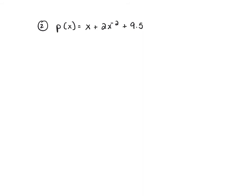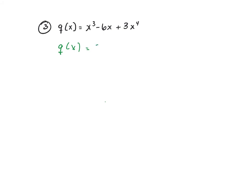This one is not a polynomial, so we're done with it. The next one is a polynomial. In standard form: q(x) = 3x to the fourth, then x cubed, then minus six x. This is a quartic — a fourth-degree polynomial. The lead coefficient is three.